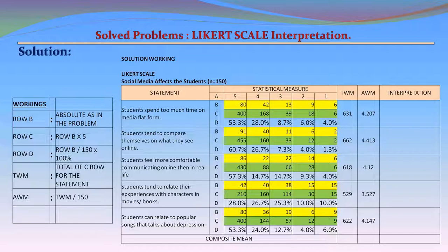Now let us calculate AWM, which is TWM divided by 150. AWM for Statement 1 = 4.207, Statement 2 = 4.413, Statement 3 = 4.12, Statement 4 = 3.527, Statement 5 = 4.147. The composite mean is the total AWM divided by 5, which comes to 4.08.